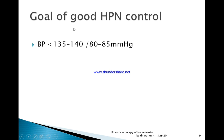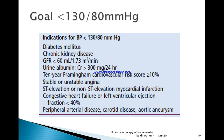The goal of good hypertension control is targeting blood pressure to less than 135 to 140 systolic by 80 to 85 mmHg diastolic. This is our target for most patients. The target will depend on certain factors — for example, a patient with diabetes mellitus or a patient with chronic kidney disease may have a lower target.